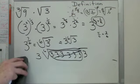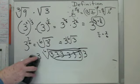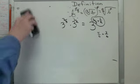Now sometimes the directions say write in exponential form. If that was the case, you could have left it as 3 to the 7/6ths. Alright, let's try another one.